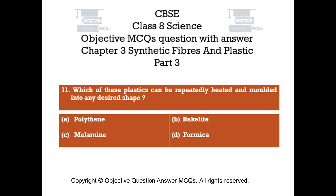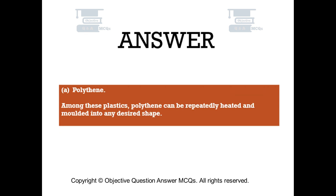Question number eleven. Which of these plastics can be repeatedly heated and molded into any desired shape? Option A: polythene. Option B: bakelite. Option C: melamine. Option D: formica. The right answer is option A — polythene. Among these plastics, polythene can be repeatedly heated and molded into any desired shape.